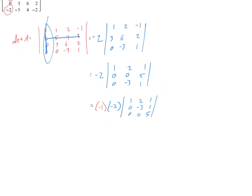The determinant of A equals (−1) × (−2) × 1 × (−3) × 5. With three negative signs and 2 × 3 × 5 = 30, the determinant of matrix A is −30. Depending on the matrix, you can use any combination of those properties that first appears useful.